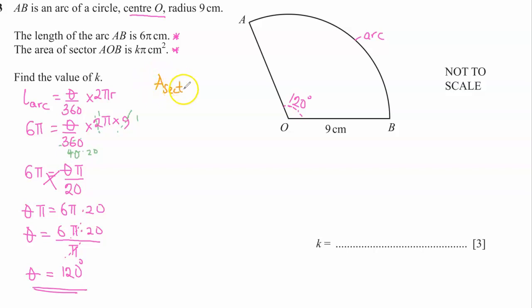Area of sector is equal to the angle divided by 360 times πr². Okay, so the length of an arc is θ over 360 times 2πr, but the area of the sector is θ over 360 times πr².